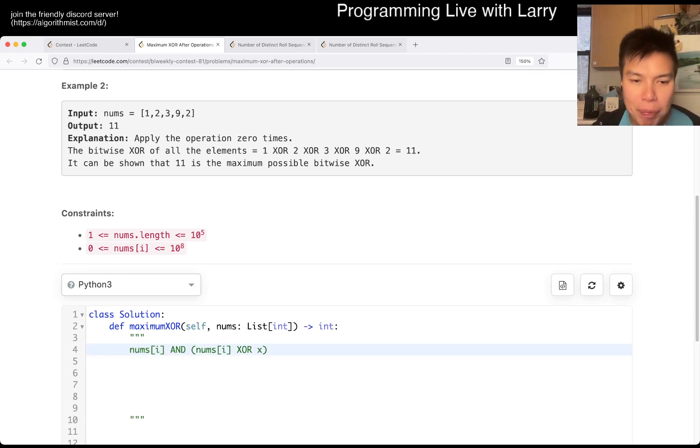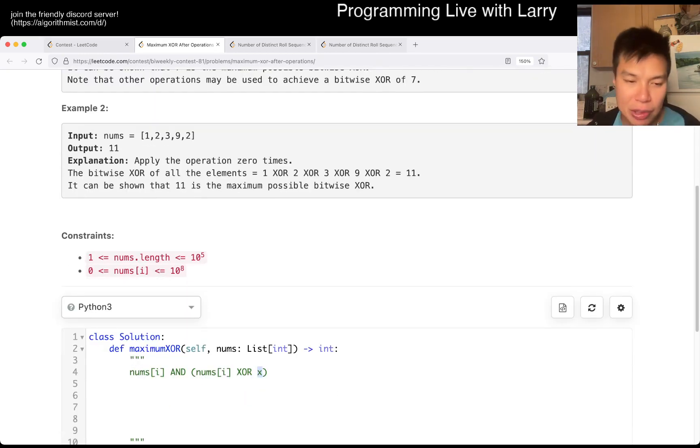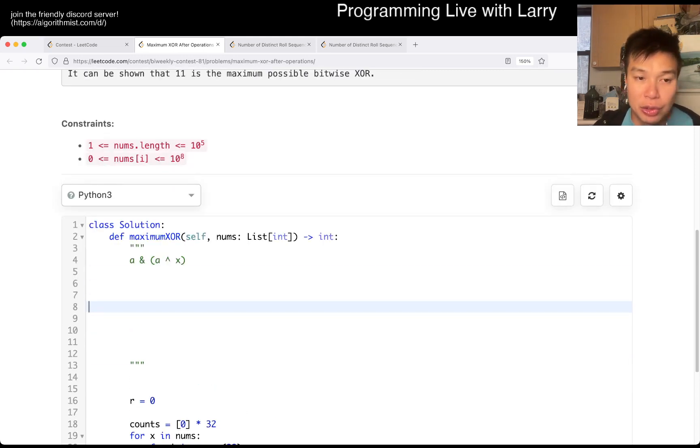Because these are all bitwise operations, we can assume that every bit inside the same number is independent of each other. And because you can do it infinite number of times, you can just do it one number at a time if you have to. So basically, you have something like X, N, X, X, or Y. Maybe that's confusing because that's an X in the thing. So let's just say A for maybe a number, and then this is just going over the truth table.